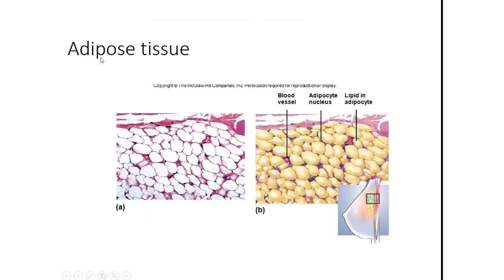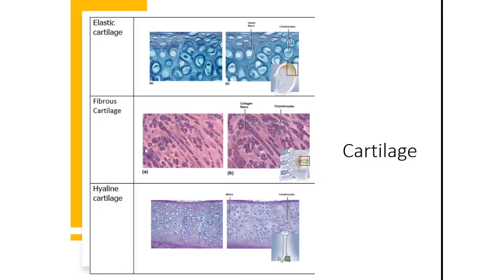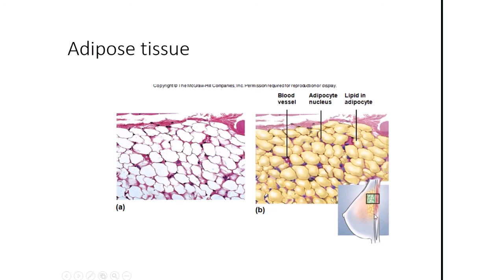Adipose tissue is basically fat tissue. Under the microscope, you can see empty spaces where fat is stored. You find fat in various locations in the body: around most organs, beneath the skin, and in breast tissue.